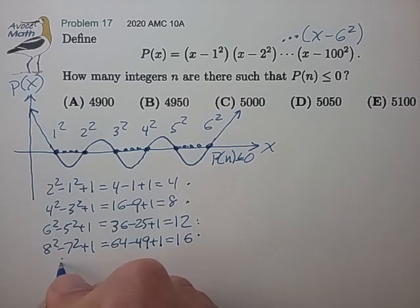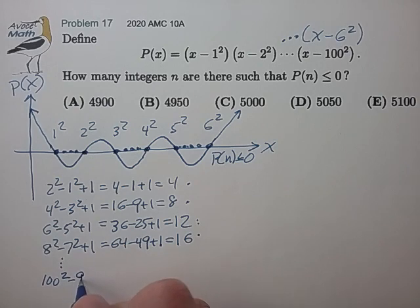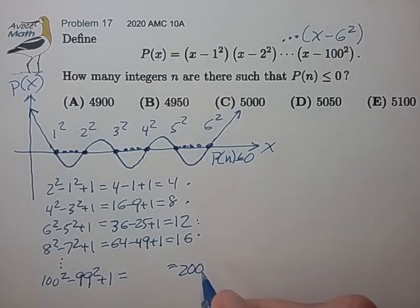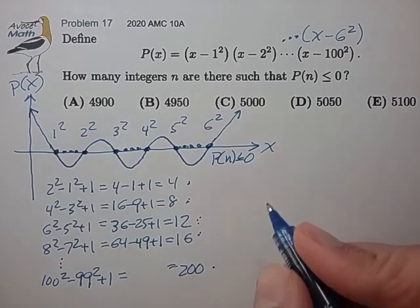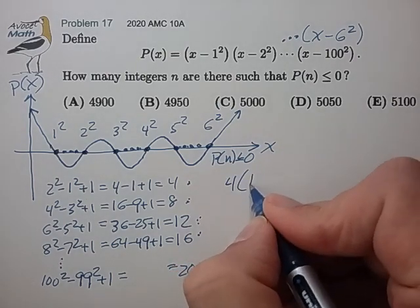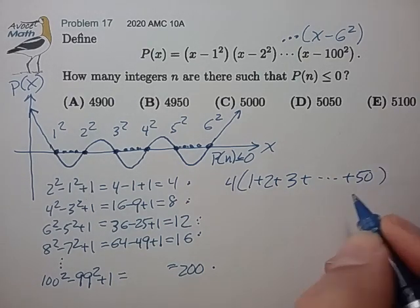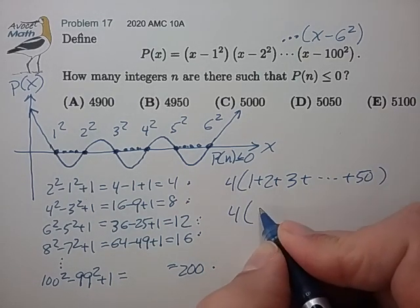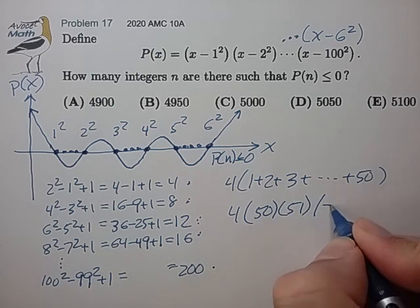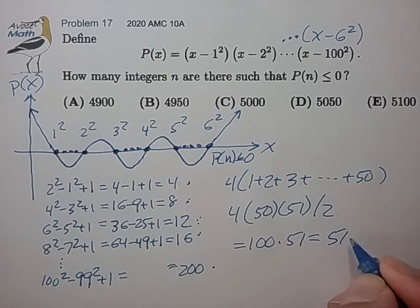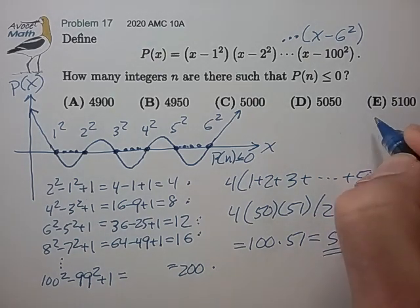So if we extend this to the full problem, we'll have 100 squared minus 99 squared plus 1. And that should work out to 200. So we just need to add this column of numbers. And that's 4 times 1 plus 2 plus 3 plus 50. That's 4 times 50, 51 divided by 2, 100 times 51. 5, 1, 0. That's answer E.